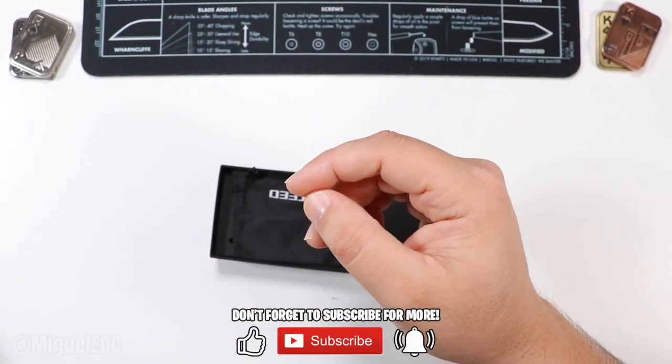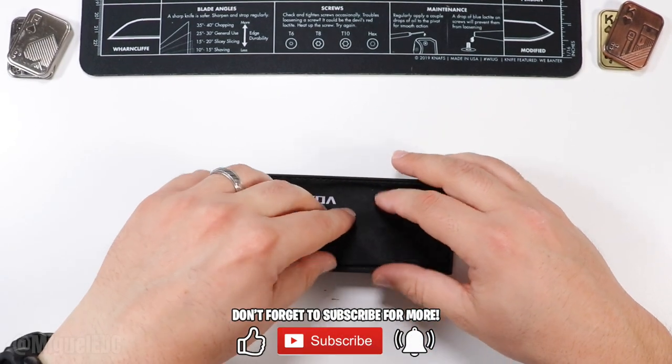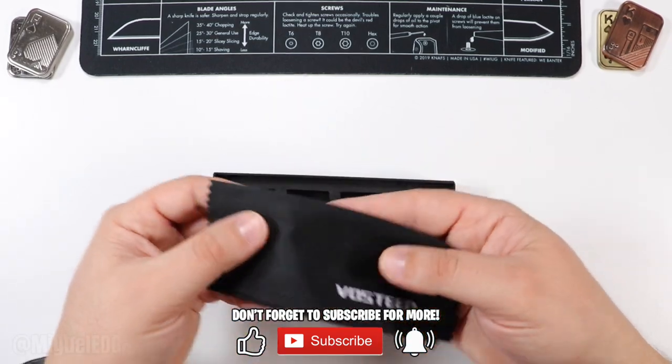At least I got some backup Omega Springs here ready to go. That's awesome. There's the Vosteed wiping cloth. And last but not least, we have the knife right here.